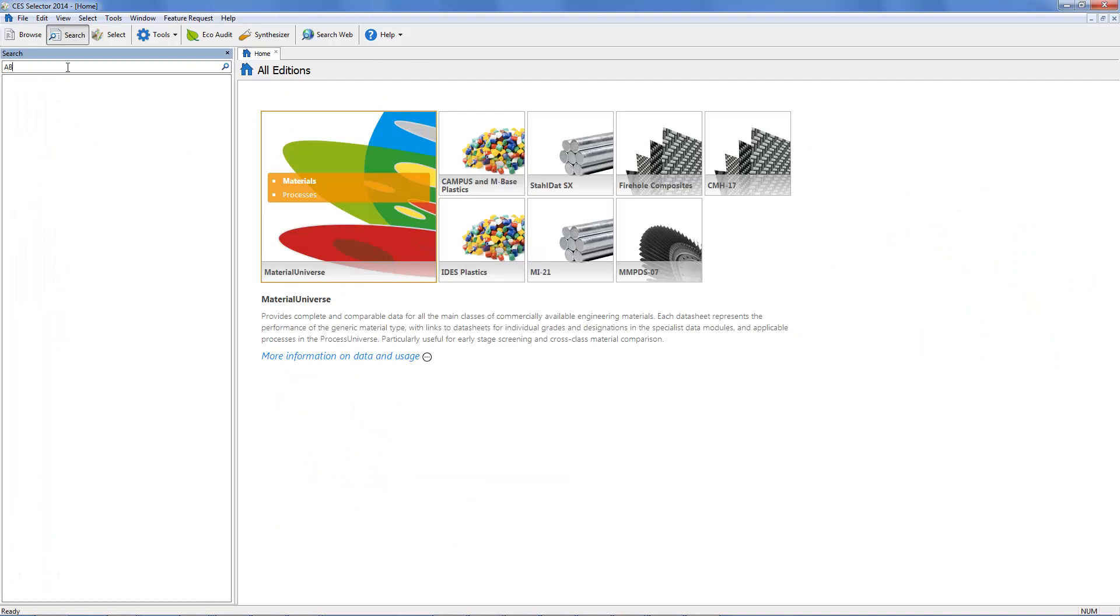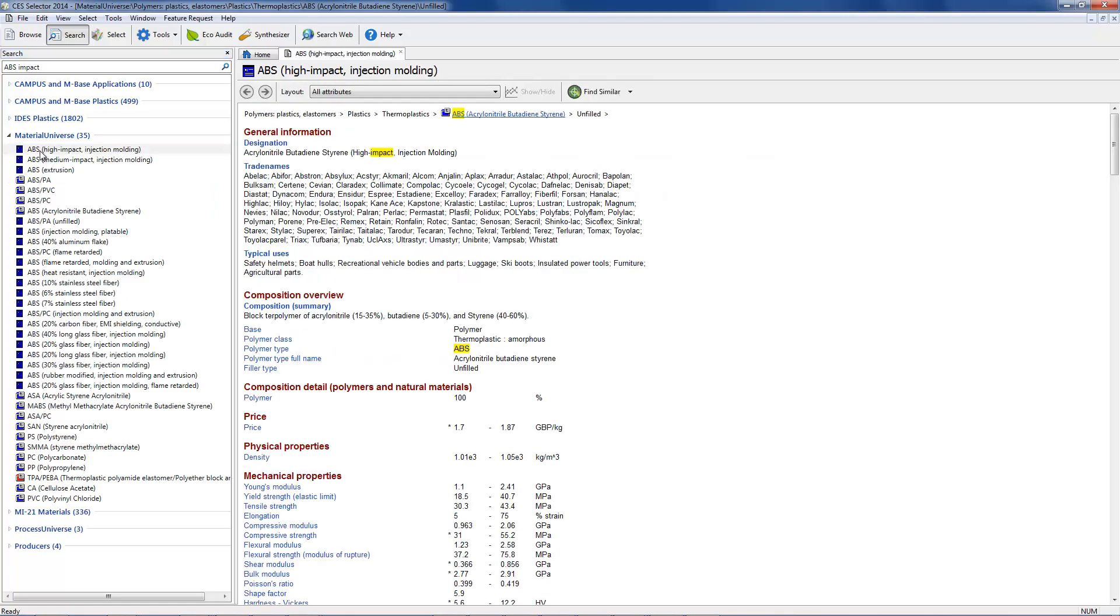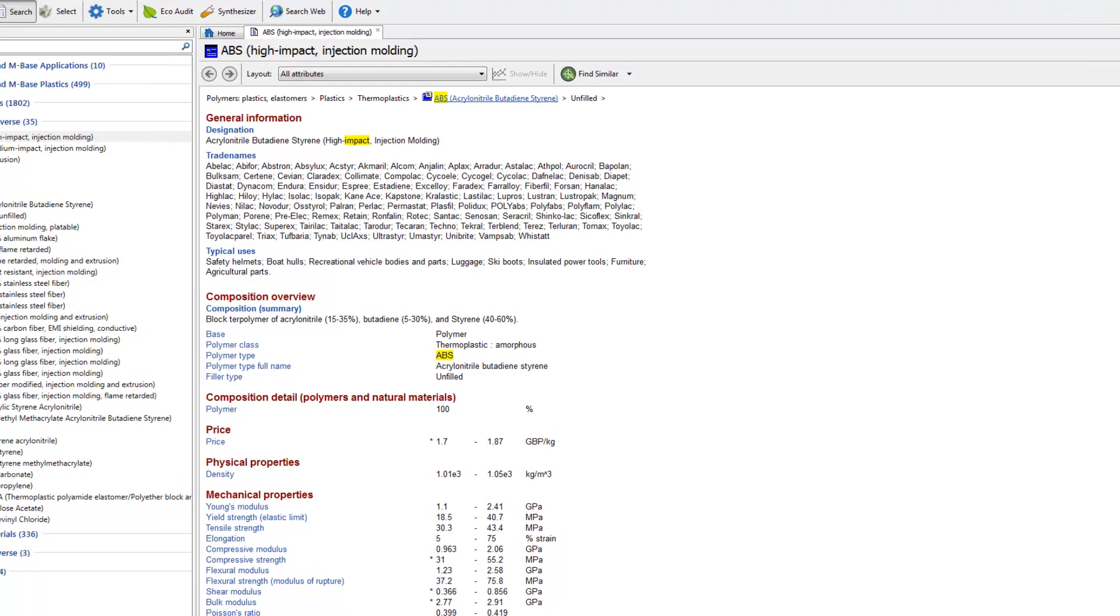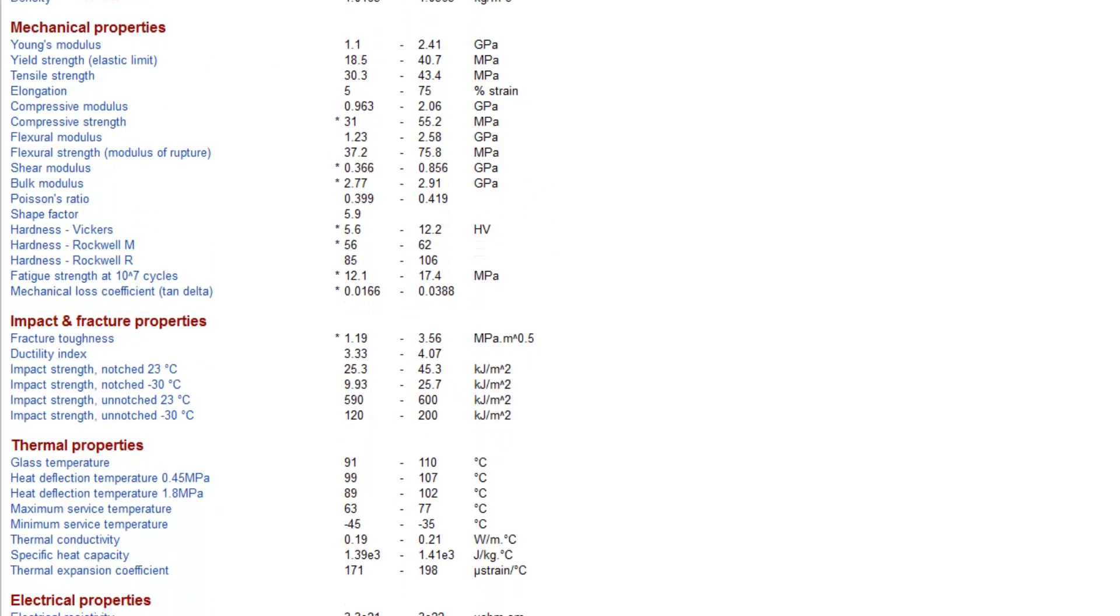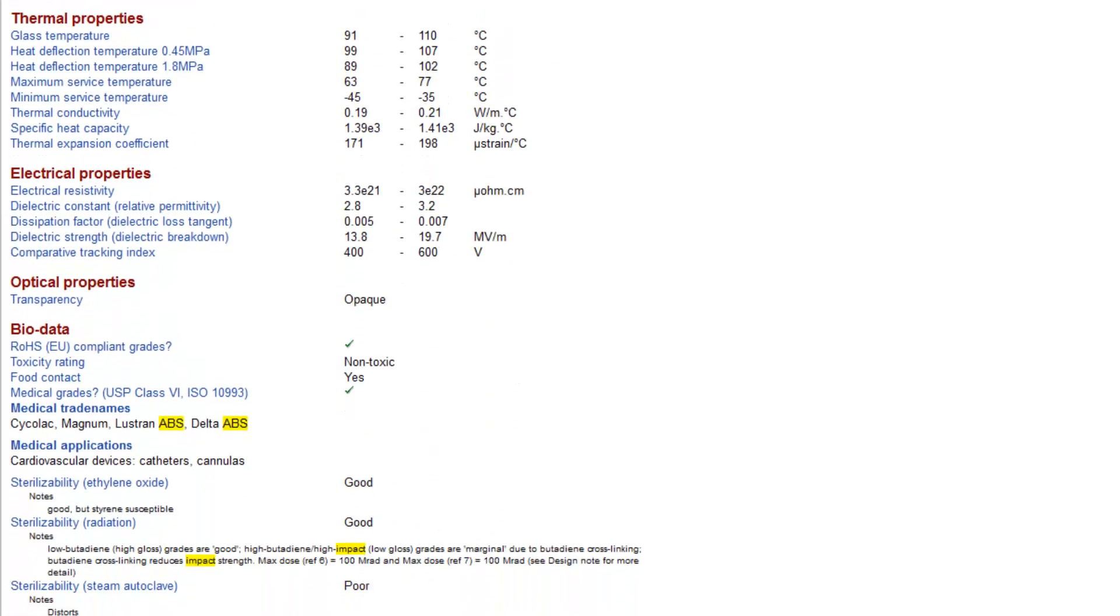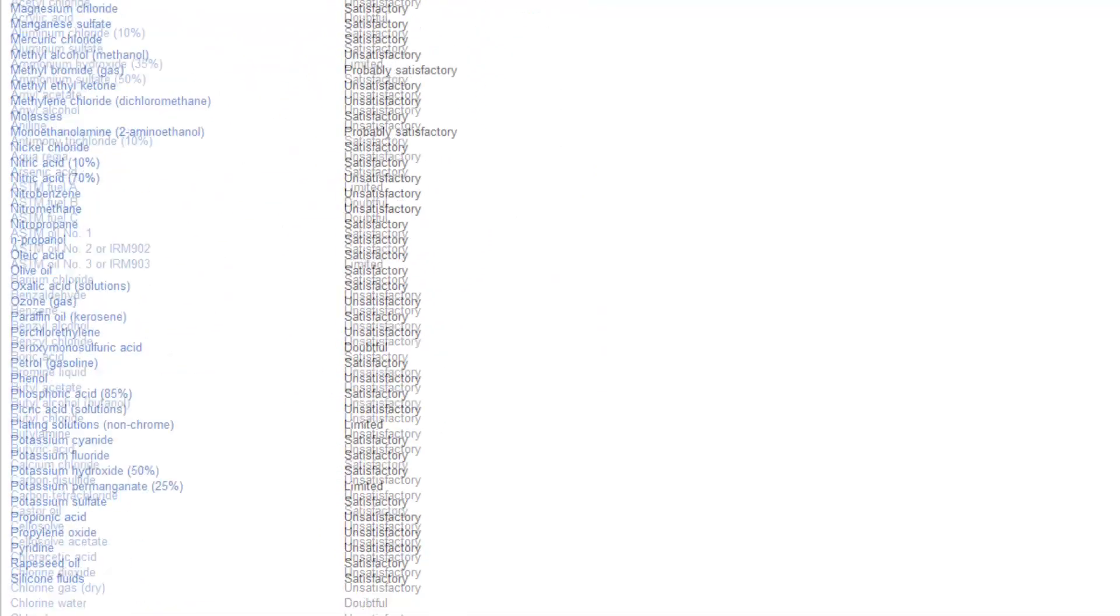Here I run a fast search across all of this data, then I click through to this datasheet for high-impact ABS. You can see the information provided for polymers, including price, mechanical, thermal, electrical, durability, and environmental performance.